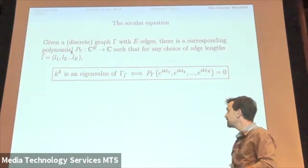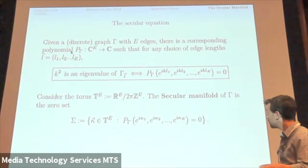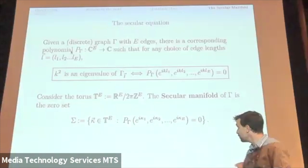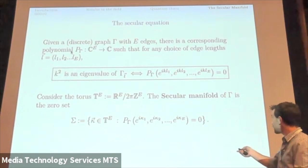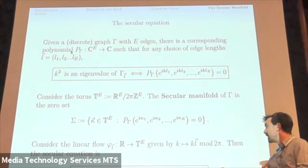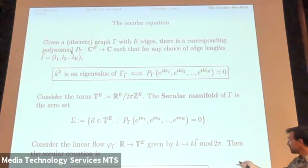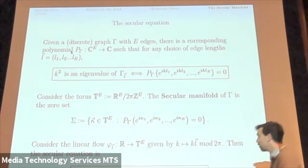Using this picture, I can now consider the torus, the E-dimensional torus, and I define the secular manifold to be the following zero set. So I have here a point on my torus. And instead of plotting here this, I plot here e^{i\kappa_1} up to e^{i\kappa_E} into this polynomial. Whenever I get a zero, that's a point in my manifold. And then I consider the following linear flow. The kappa goes to kappa plus kL mod 2π.